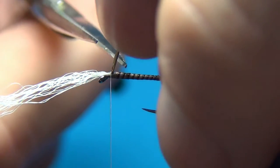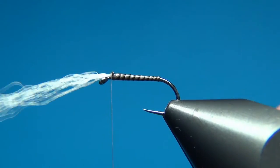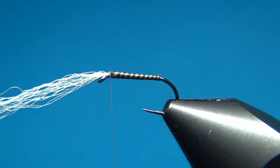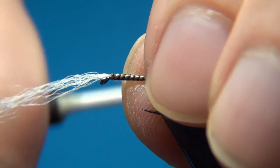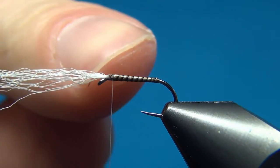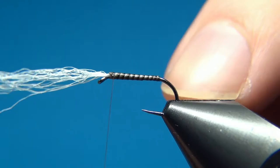And this technique works for almost any insect. You could tie mosquitos this way, or an adult midge, or for caddisfly, or anything. I really like peacock quill. And then as you come up here to the thread, you just tie it off.